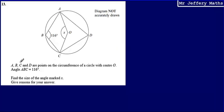This is question 13. Here I'm told that A, B, C and D are points on the circumference of a circle with centre O. Then I'm told that the angle ABC is equal to 116 degrees. Then I'm asked to find the size of the angle marked X. I'm also asked to give reasons for my answer.